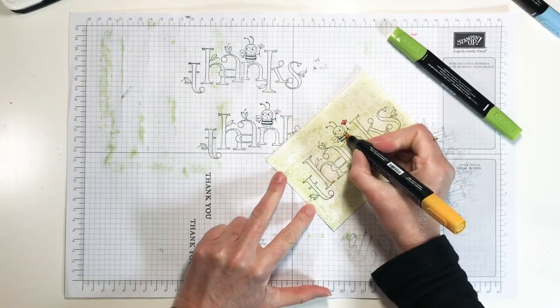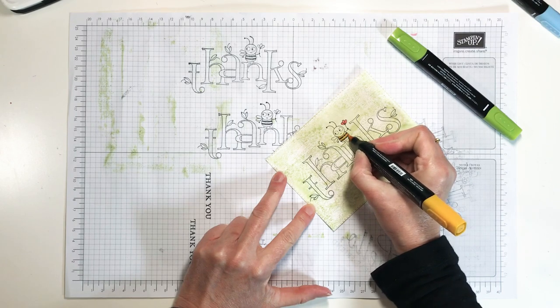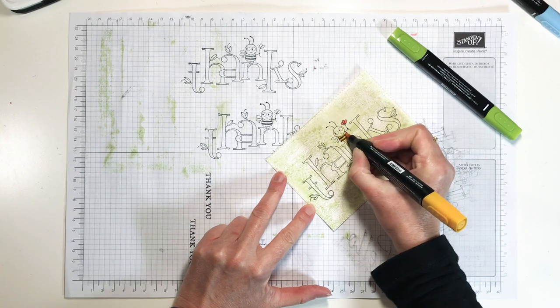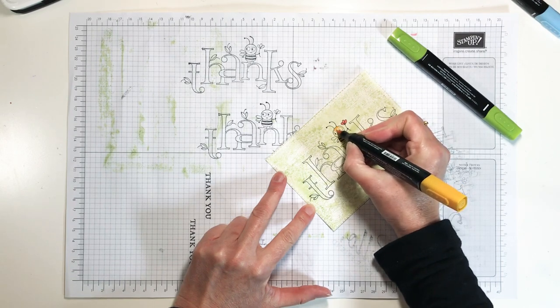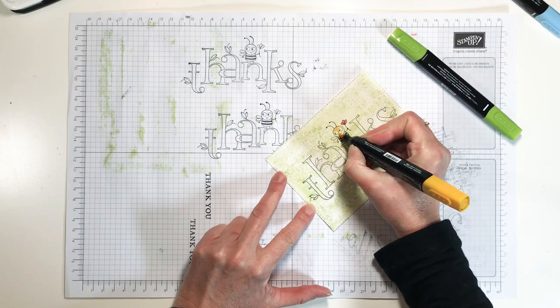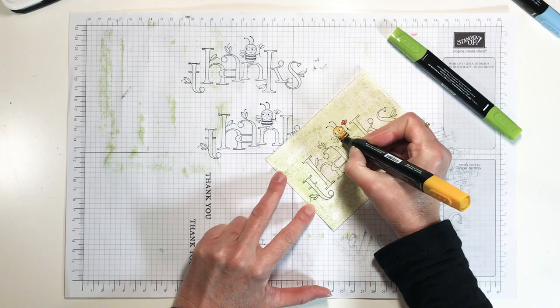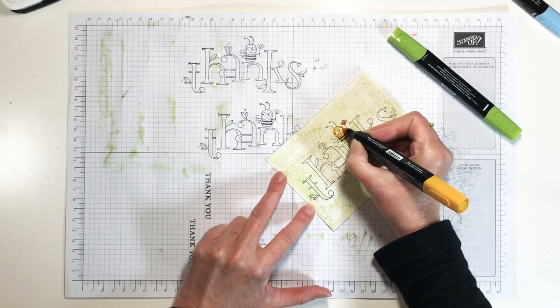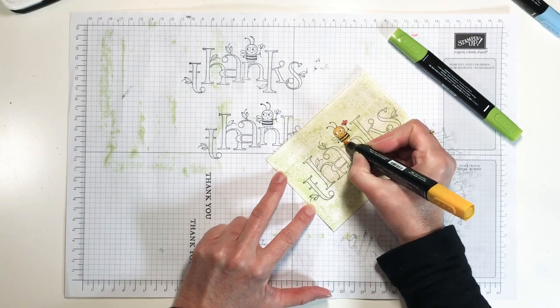I'm just going to color him and go ahead and go over those black lines because they're black and that's just going to highlight that and color his face so he doesn't look like an alien because we did make him green. And I'm not going to shade or do anything with him I'm just going to color him all one color.